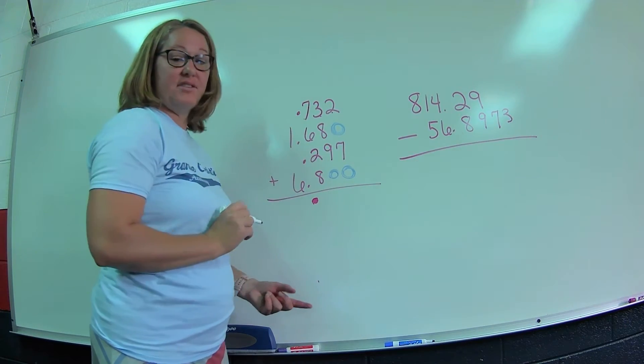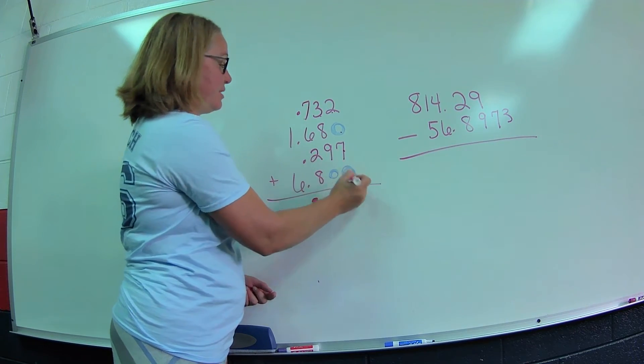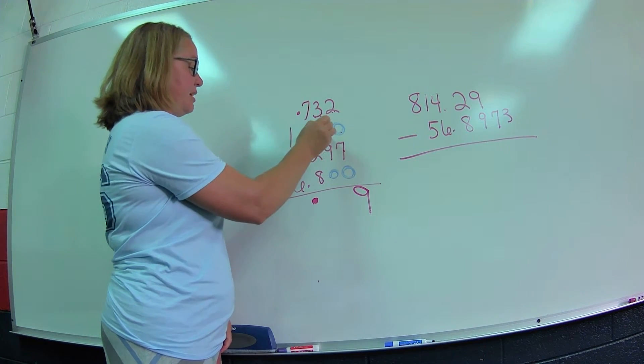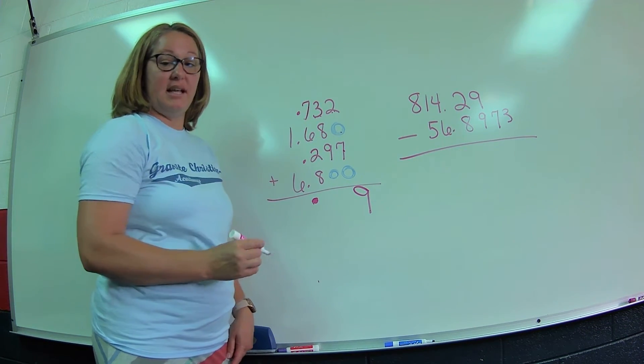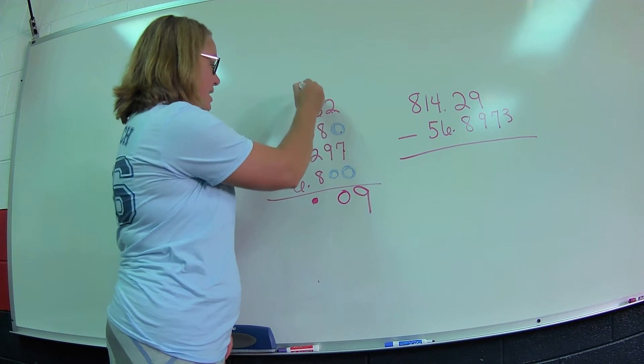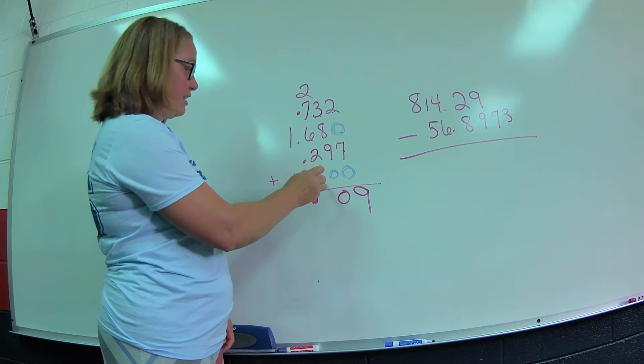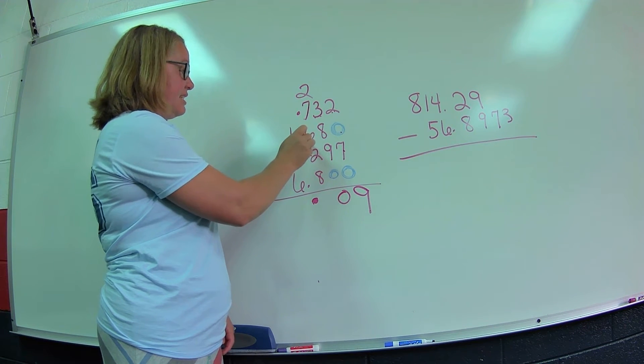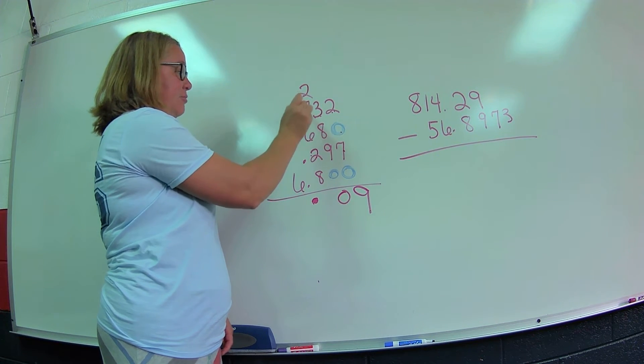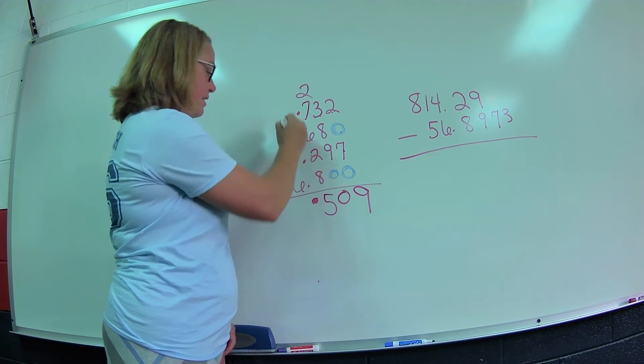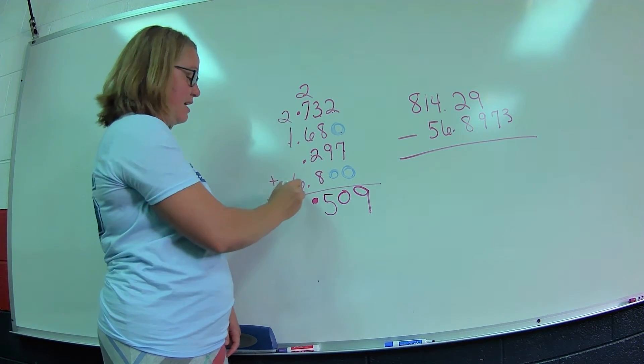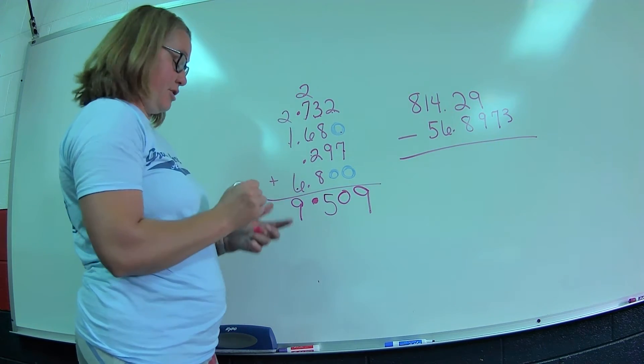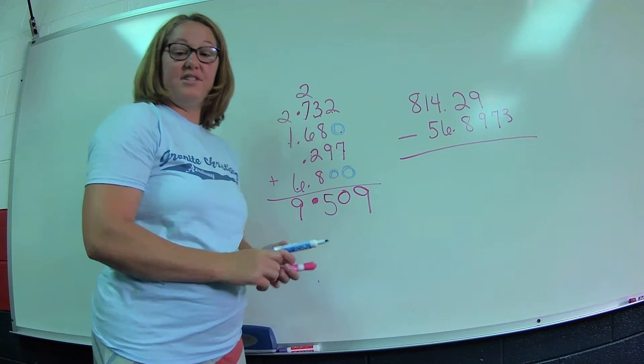Now we can go with adding. We need to bring our decimals straight down. It needs to stay in a line. Now we start with the farthest column over, which in this case is the thousandths place. Two plus zero plus seven plus zero is nine. Three plus eight is eleven, plus nine gives us twenty. Eight plus two is ten, so sixteen, seventeen, eighteen, and eighteen plus seven gives me twenty-five. Carry a two. Two plus one is three, plus six is nine.